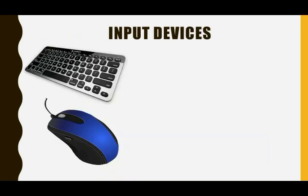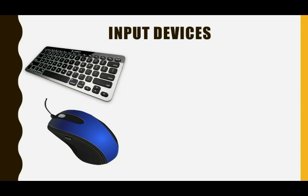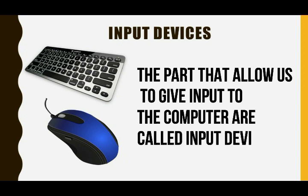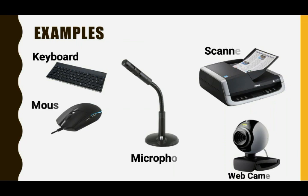Now, first, input devices. We can tell a computer what to do with the help of a keyboard and a mouse. The parts that allow us to give input to the computer are called input devices. A few examples of input devices are keyboard, mouse, and scanner.